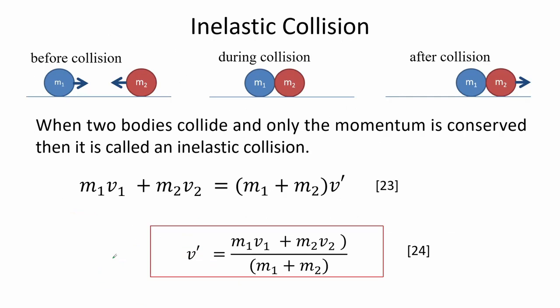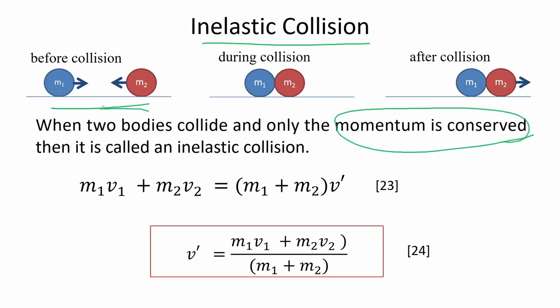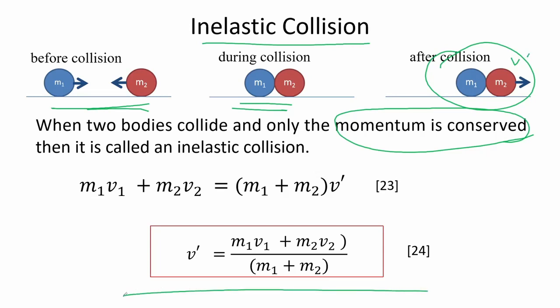When two bodies collide and only momentum is conserved, it is called an inelastic collision. Consider two masses on a frictionless surface moving toward each other; after collision they join together with the same velocity. Using the equation for conservation of momentum and solving for the final velocity gives equation 24.